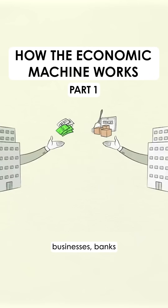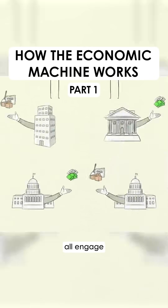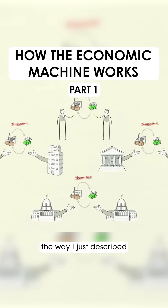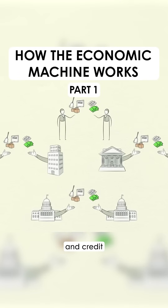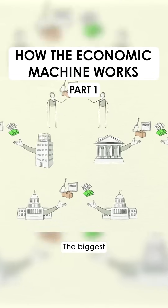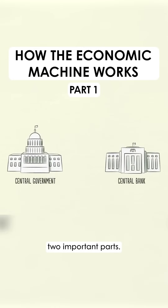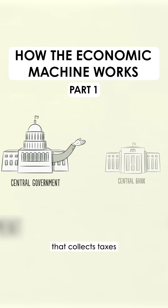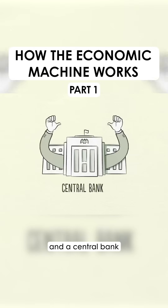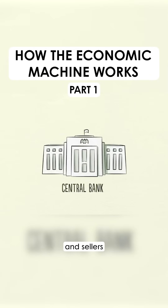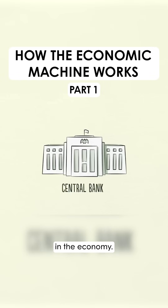People, businesses, banks, and governments all engage in transactions the way I just described — exchanging money and credit for goods, services, and financial assets. The biggest buyer and seller is the government, which consists of two important parts: a central government that collects taxes and spends money, and a central bank, which is different from other buyers and sellers because it controls the amount of money and credit in the economy.